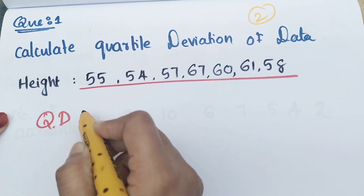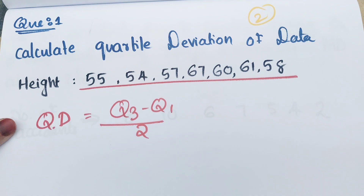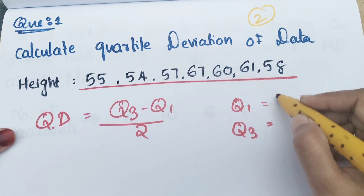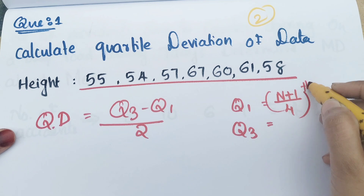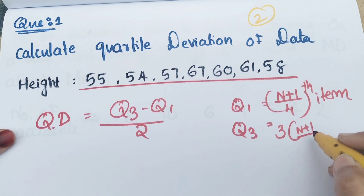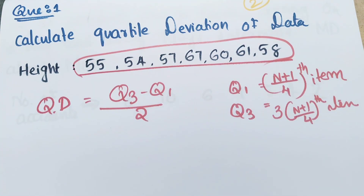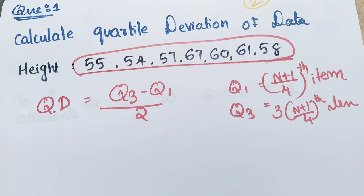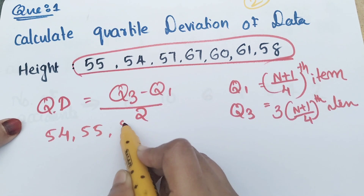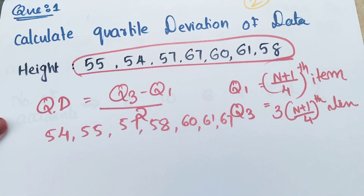Quartile deviation is equal to Q3 minus Q1 divided by 2. Q1 is equal to the (n+1)/4th item. Q3 is equal to 3 into (n+1)/4th item. Item is not the value. We arrange in ascending order. The values are: 54, 55, 57, 58, 60, 61, 67. This is ascending order.